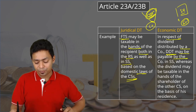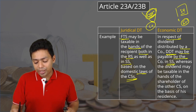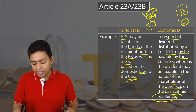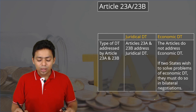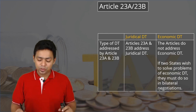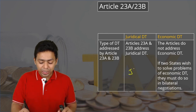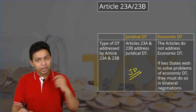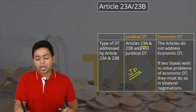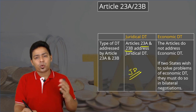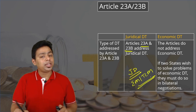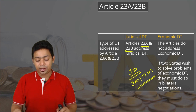DDT may be payable by a company in the source state, whereas the dividend may be taxable in the hands of the shareholder of the other contracting state on the basis of residence. Handling jurisdictional double taxation is straightforward and that is what is in our syllabus, because Article 23A and 23B already provide the mechanism — either the exemption method or the tax credit method.